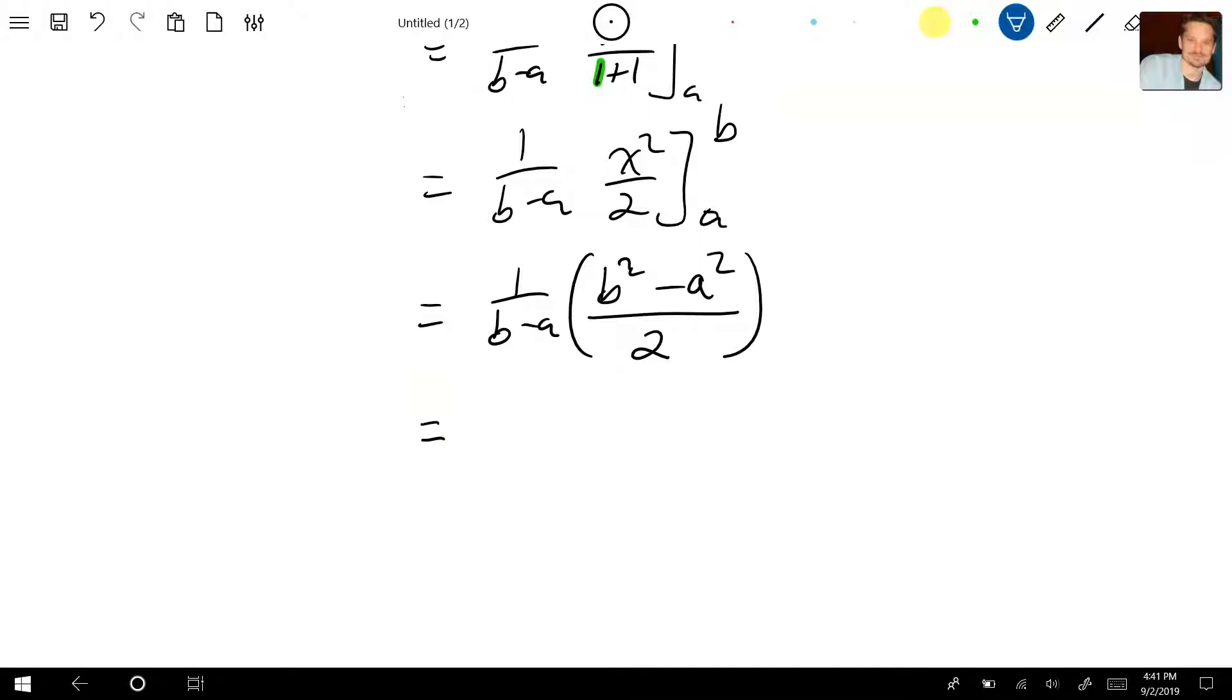The next stage: b squared minus a squared is a difference of squares, so you factor that. You're going to have 1 over b minus a, and then here's going to be b minus a multiplying b plus a, and the whole thing is divided by 2. And now you stop and you cancel off what you can, so that means this can be easily canceled with that. Simplifying the rest of it will give us b plus a over 2, and stop right here.